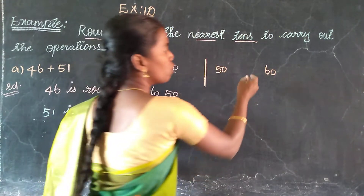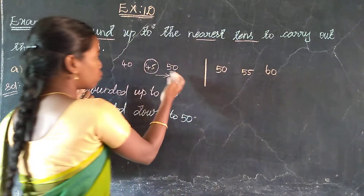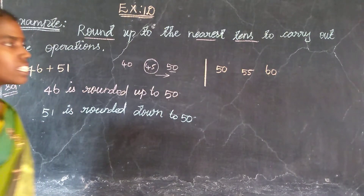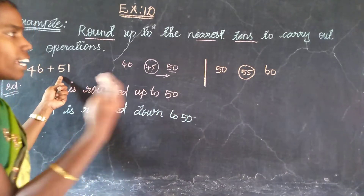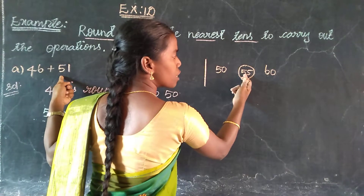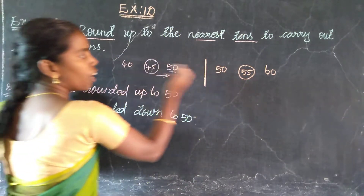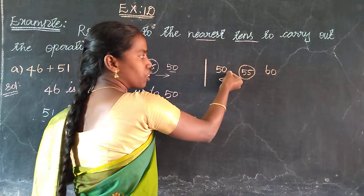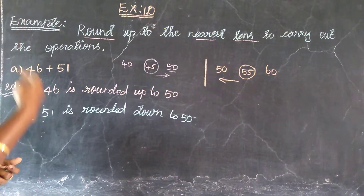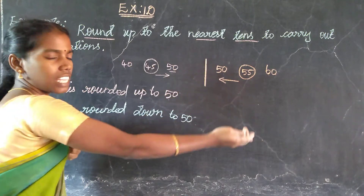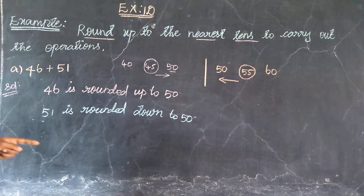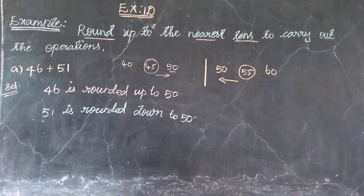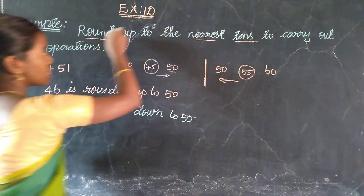The exact center value between 50 and 60 is 55. Since 51 is on the front side of center, we count back: 55, 54, 53, 52 — 51 is below center. So 51 rounds down. The nearest tens value is 50.